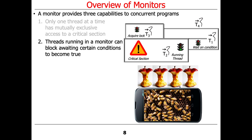Threads running in a monitor can block awaiting certain conditions to become true. This is actually very similar to the condition object stuff we talked about before, although a little more limited in many ways. When you're blocked waiting on a condition, you step outside of the critical section but haven't entirely left the monitor object complex. There's kind of a waiting room. So this thread is waiting on a condition, and now thread T2 is inside the critical section running.